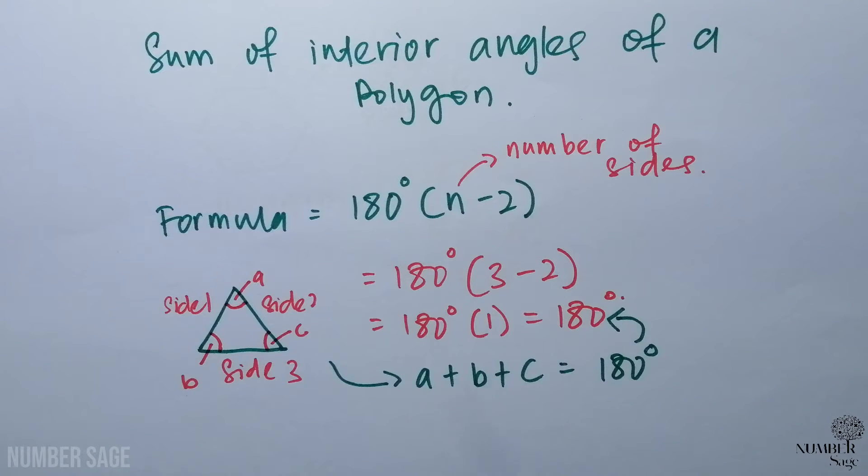For example, in this diagram we have a triangle with side one, side two, and side three. To find the interior angle of this triangle, we can replace the n in this formula with the value of three. So three minus two will give us 180 times one, equivalent to 180.